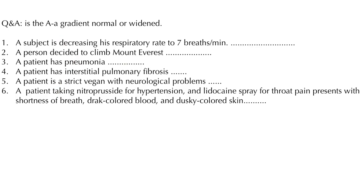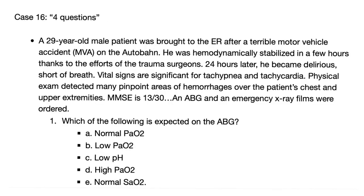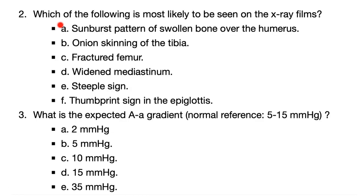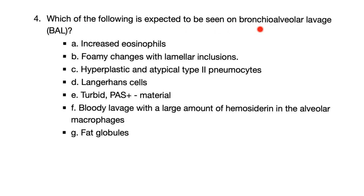Here are some questions for you — please answer: is the AA gradient normal or widened? Answer these questions and find the correct answers in the next video. Here is a nice case with four questions — this is the 16th case; the previous 15 cases are in the previous videos in this pulmonology playlist. Second question: which finding is most likely on the X-ray? Third: what is the expected AA gradient? I'll give you the normal range of 5 to 15. Fourth: what is expected to be seen on bronchoalveolar lavage? Answers will be in the next video.